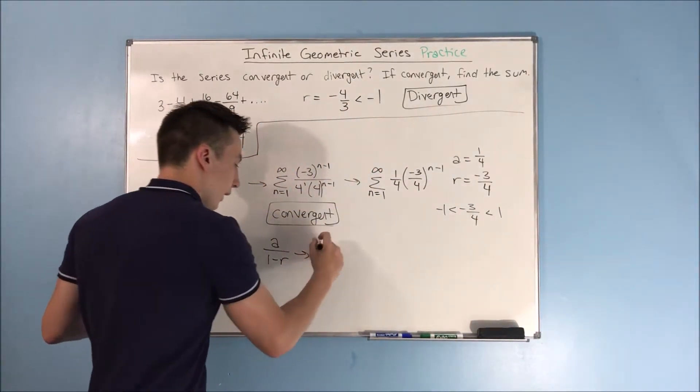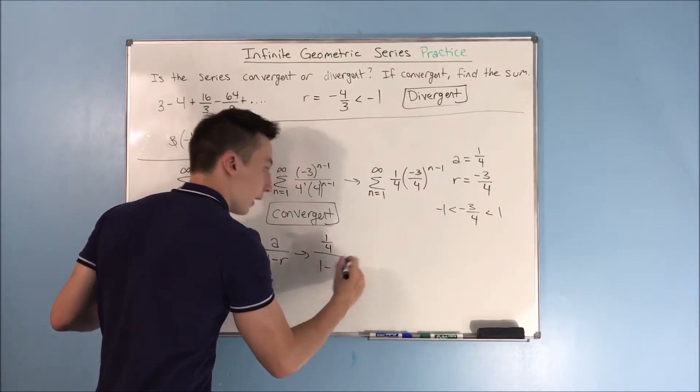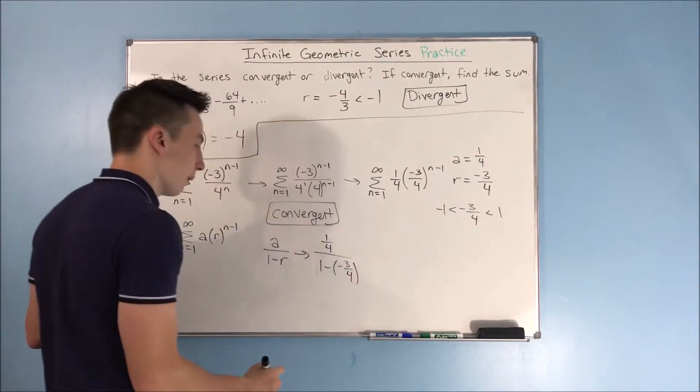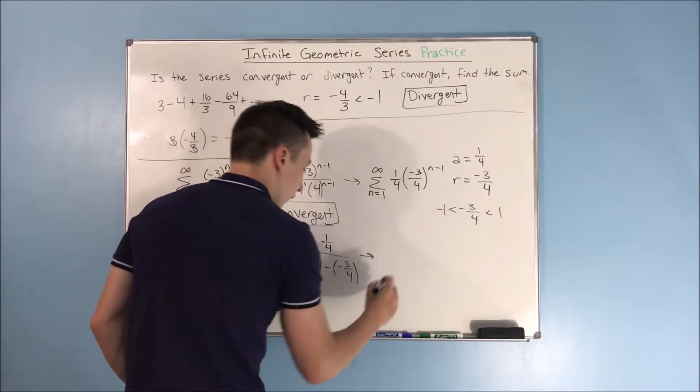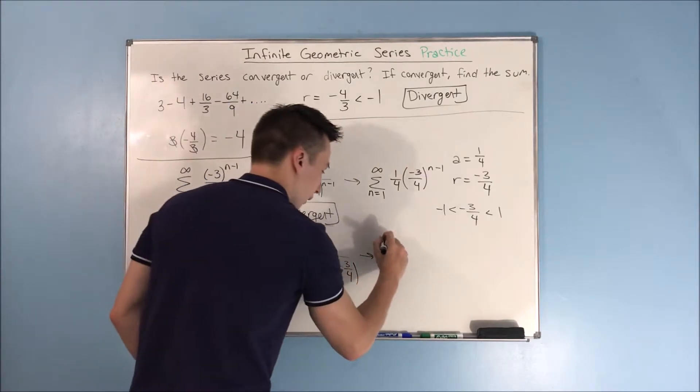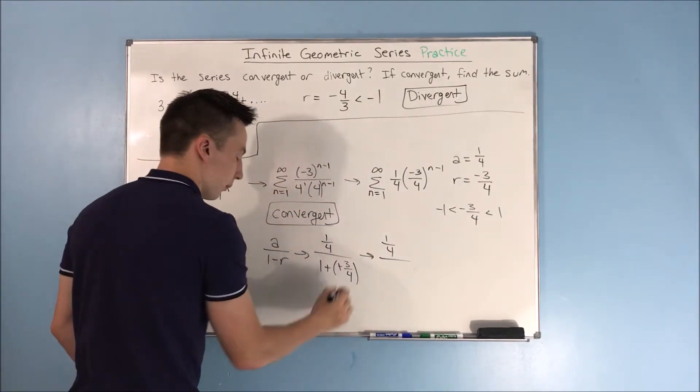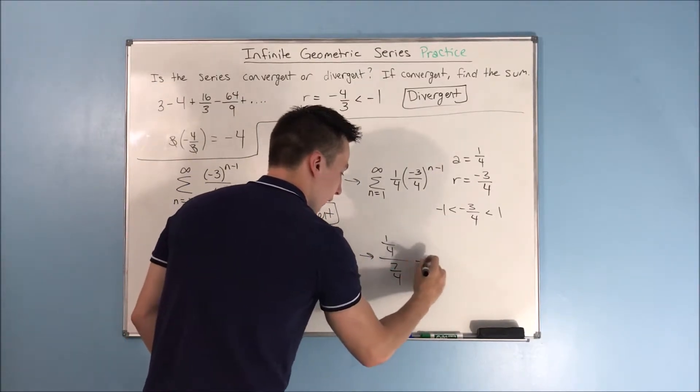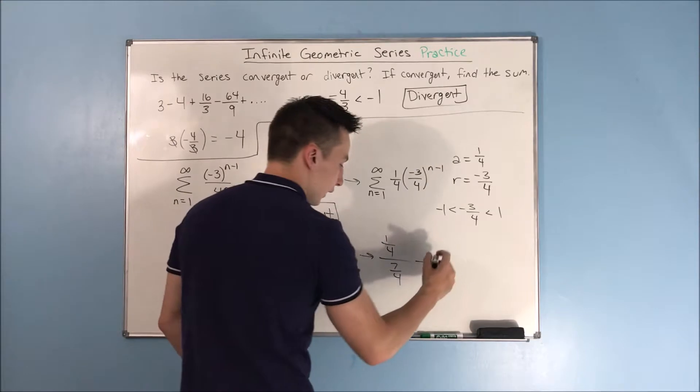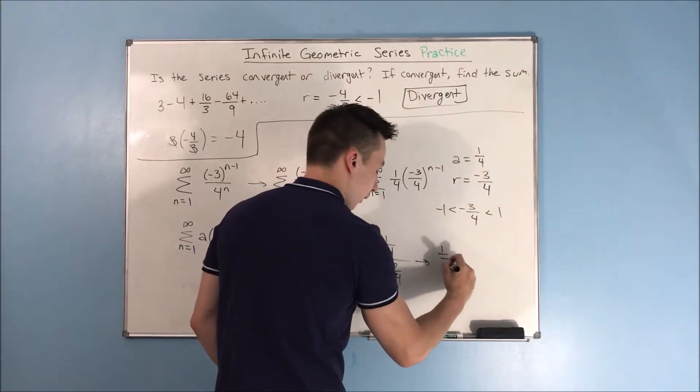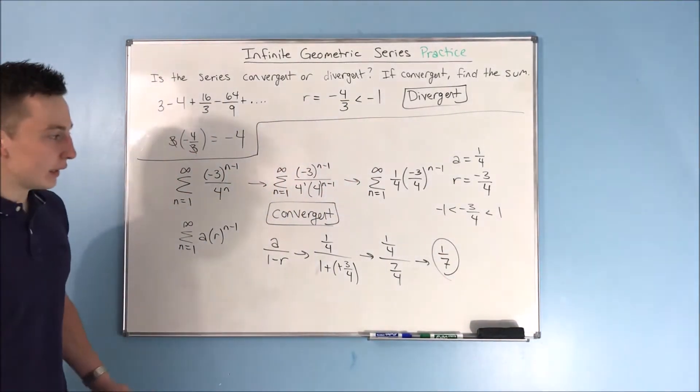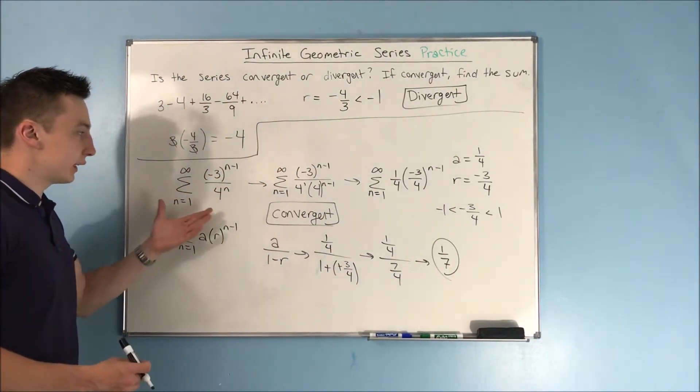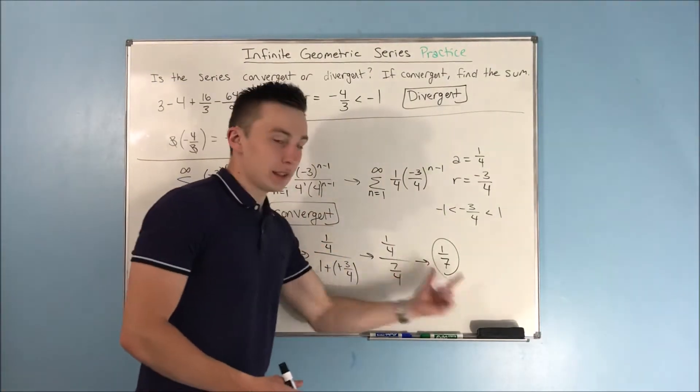So, we can rewrite this as 1 fourth over 1 minus our r, which is going to be negative 3 fourths. Doing a little bit of subtraction work here, actually addition because these become positive, you get a 1 fourth over 7 fourths, and that is just going to be 1 seventh. So, that is the sum of this series. This infinite series has a finite sum.